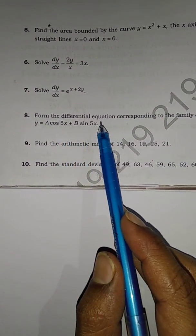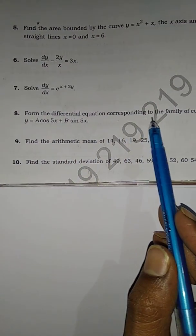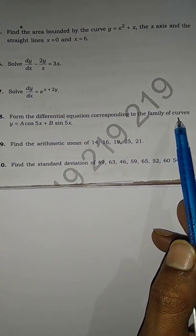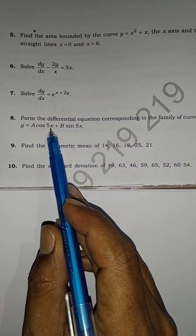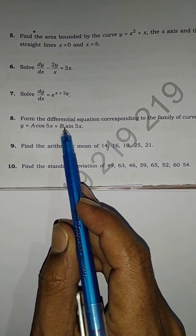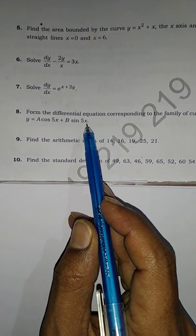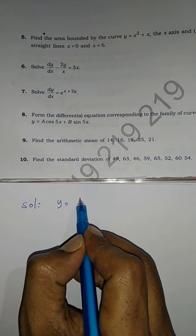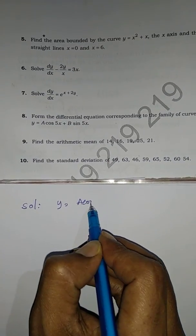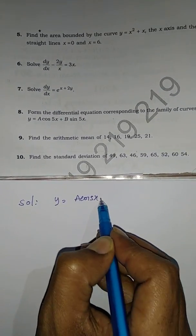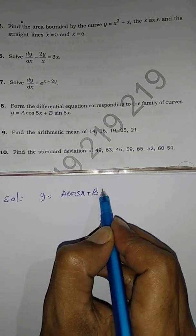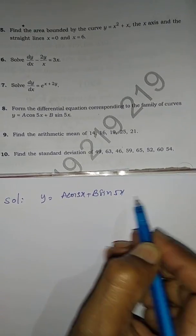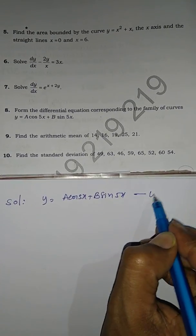Question 8: Form the differential equation corresponding to the family of curves y = a·cos(5x) + b·sin(5x). Solution: We assume y = a·cos(5x) + b·sin(5x) as equation number one.